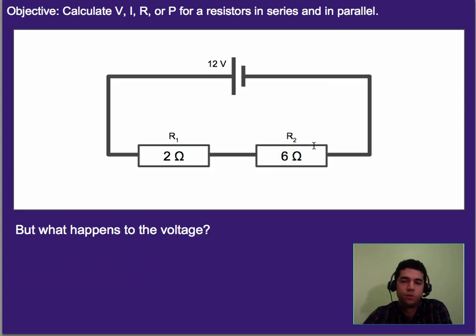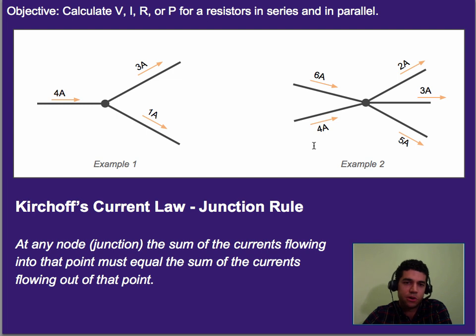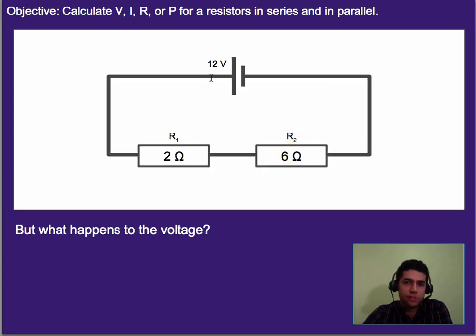But what happens to voltage in these sort of situations? Because we just talked about current and we will talk about resistance later on. But what happens to voltage if we have 2 resistors in a row like this and we have a 12 volt battery? Do they both get 12 volts? Do they split it up? What happens?